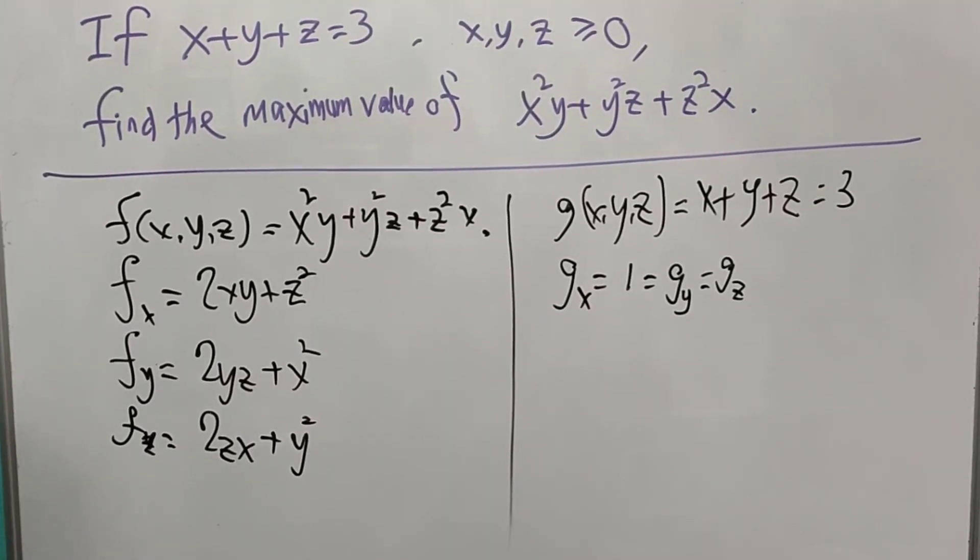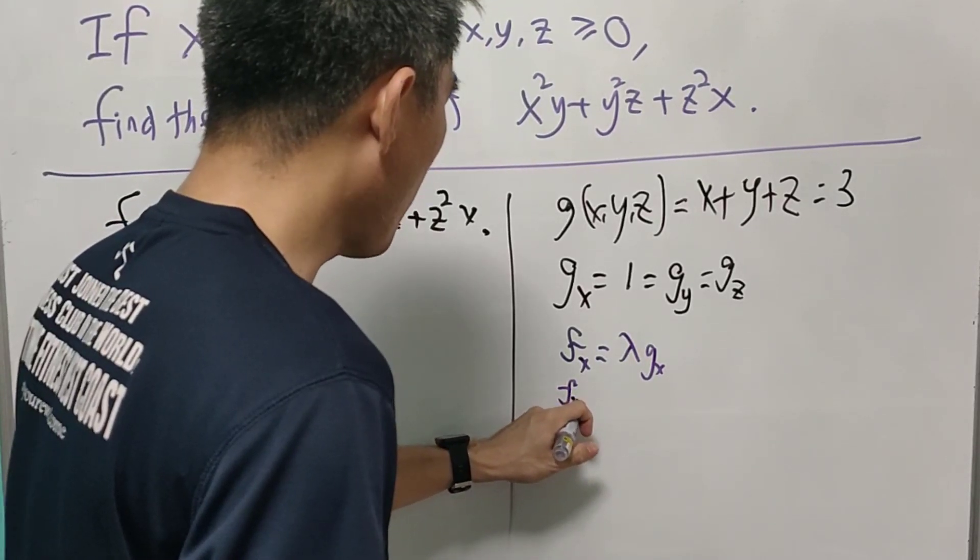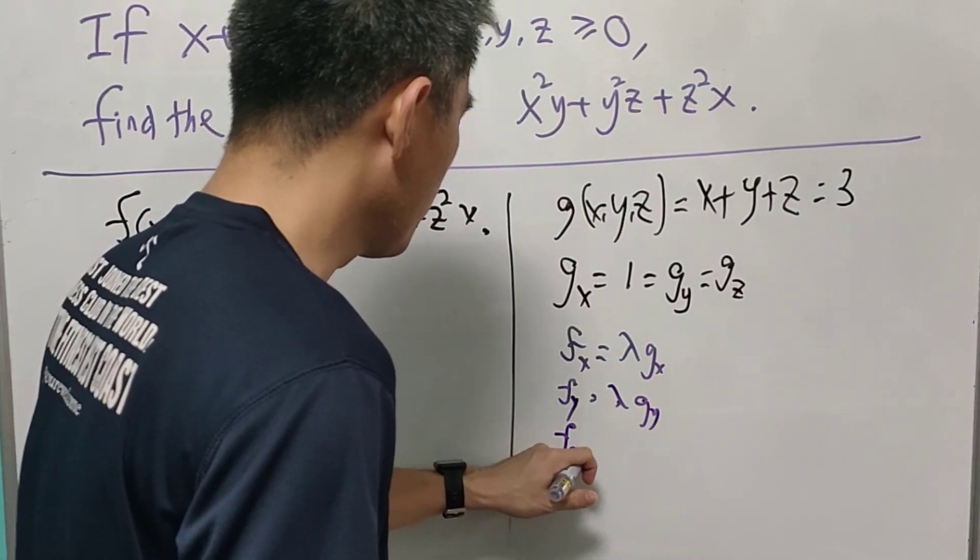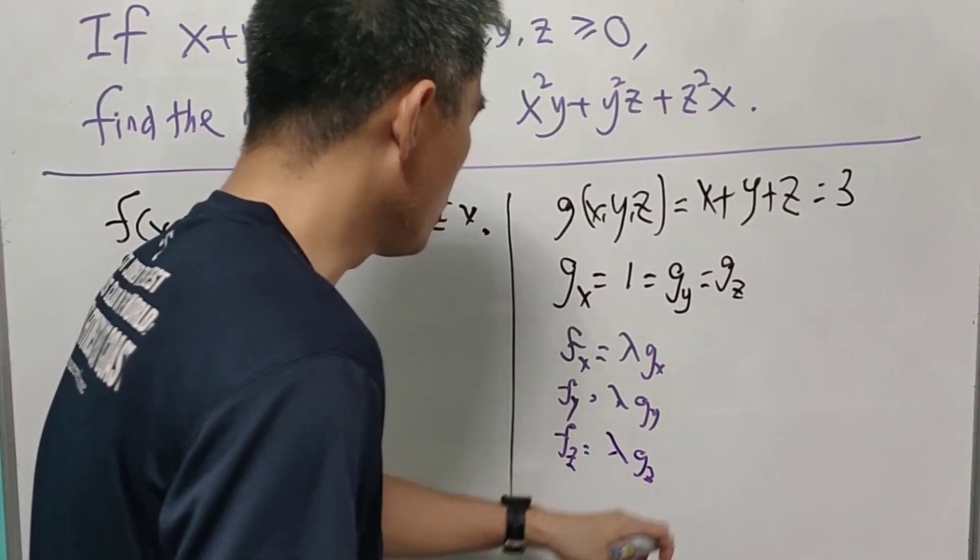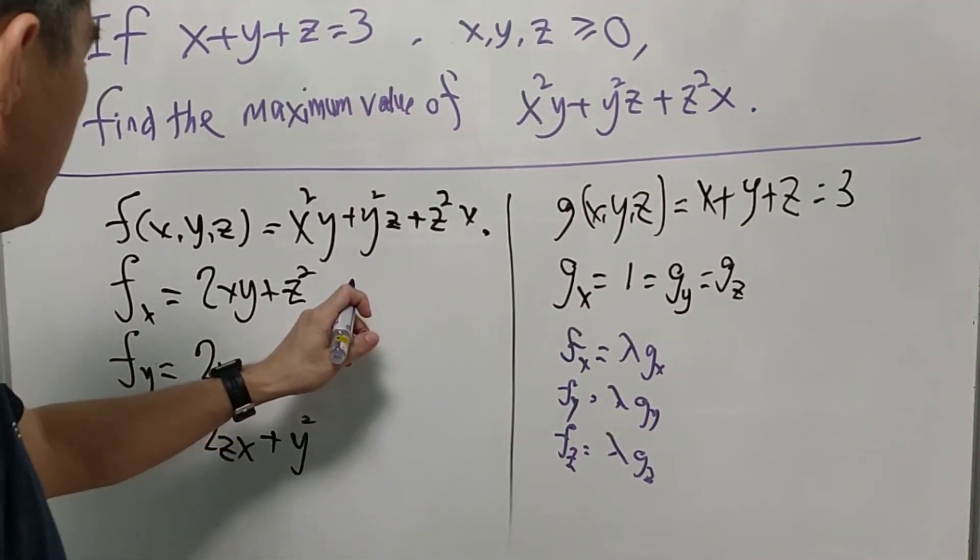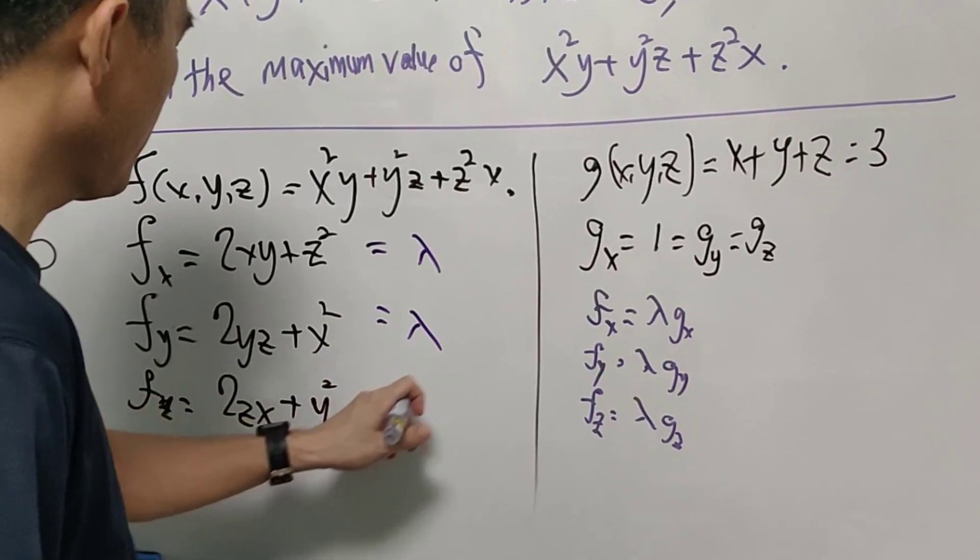Using the method of Lagrange multiplier, we should have fx equal to lambda of gx, fy equal to lambda of gy, and fz equal to lambda of gz. So in this case, this will equal to just lambda, lambda, and lambda.